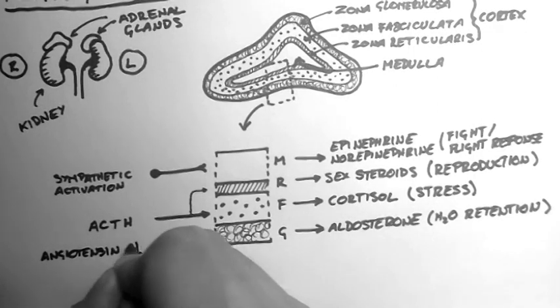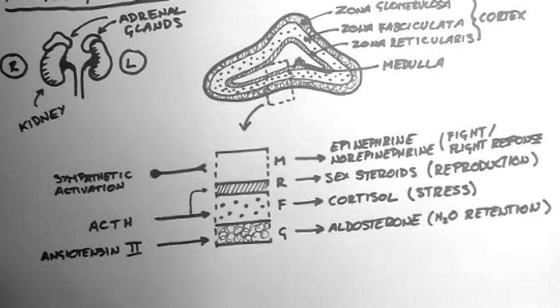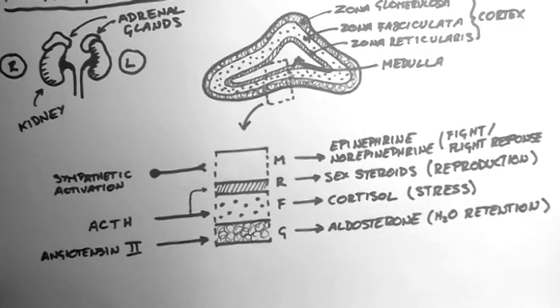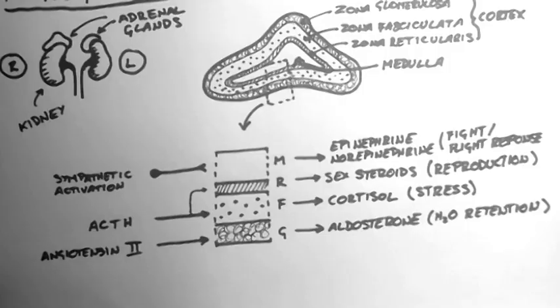Angiotensin II causes the release of aldosterone, and it's part of the renin-angiotensin-aldosterone pathway.